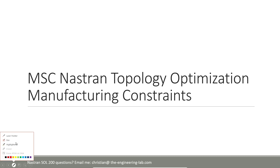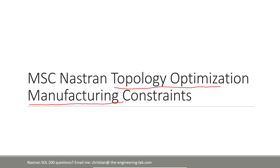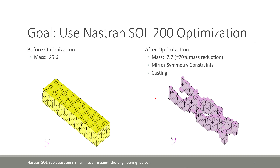Today we are performing another example with MSC Nastran Solution 200. We are going to perform a topology optimization and focus on manufacturing constraints. My name is Christian and I'll be going through today's example. We are going to start with the original design in yellow on the left, maximize the stiffness of the final design while reducing the mass by 70%. What's special about this example is that we want to impose both symmetry and casting constraints.